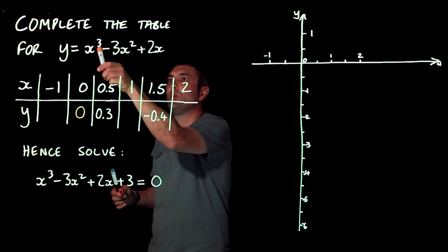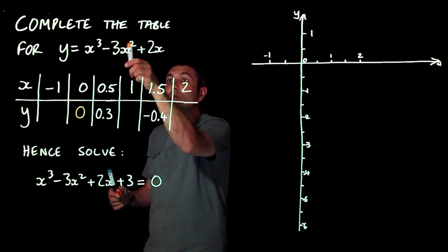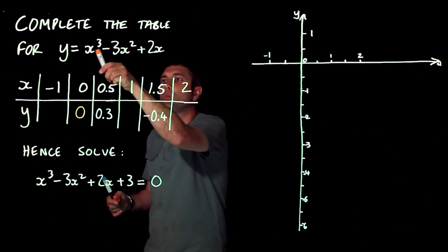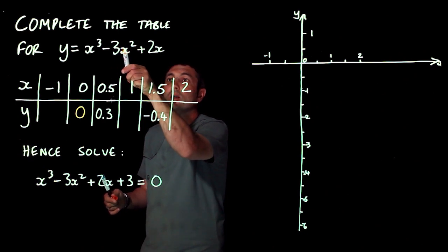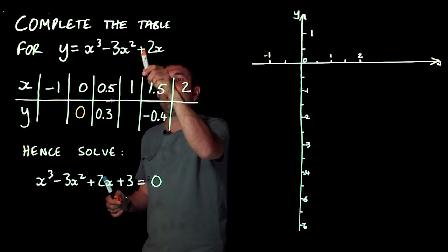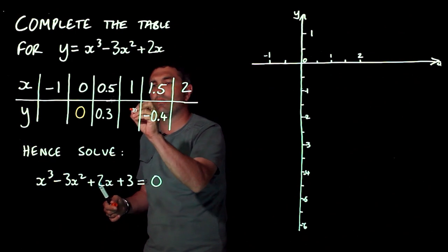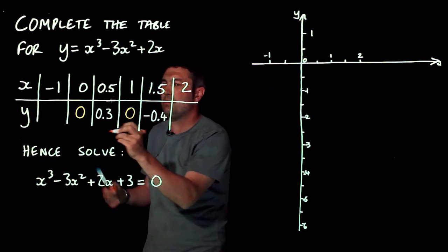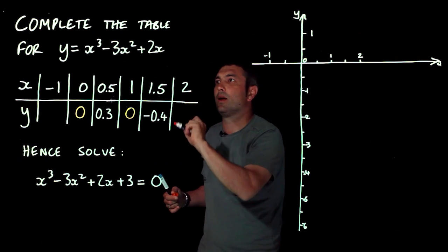Let's have a go at one. One cubed is one, take away three lots of one squared. Well, one squared is also one, so one take away three is minus two, and then add two lots of one. We get zero again. Now, am I spotting a pattern? We'll see. I'm going to check this one now.